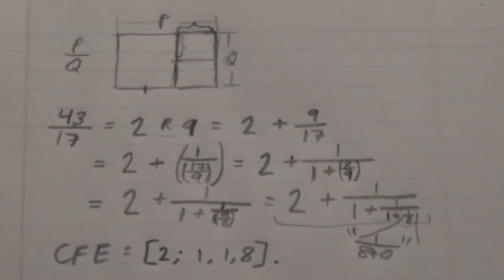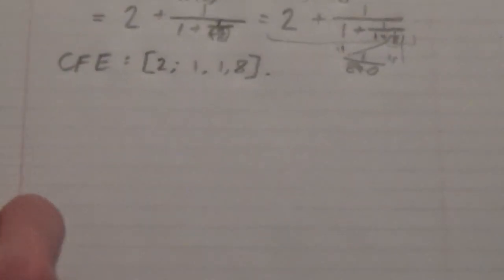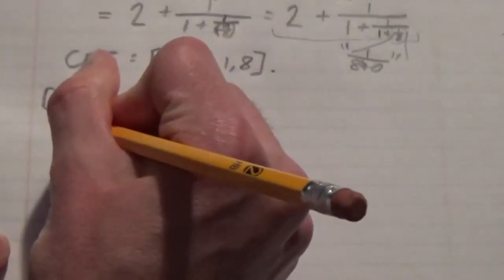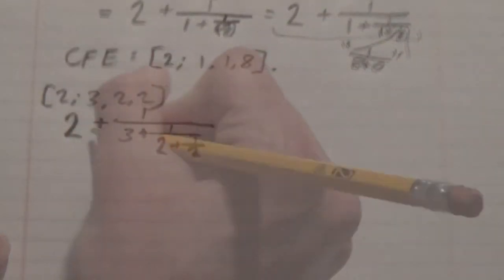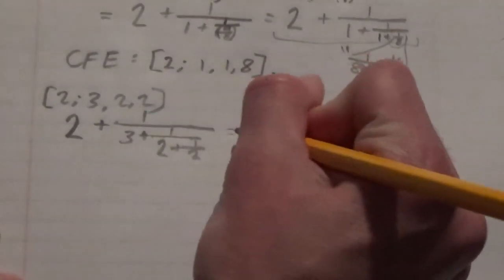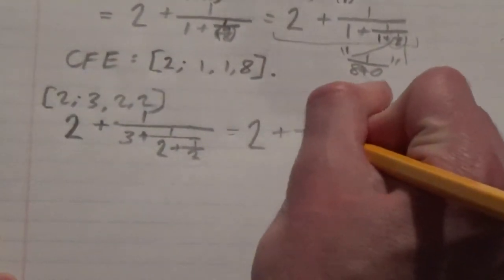We can also go the other way, from the Continued Fraction to the Ratio of Integers, which should become very clear in a moment. In order to do this, let's use 2 semicolon 3, 2, 2, 2. First, we can write it out in the more expanded notation. So it's clearly 2 plus 1 over 3 plus 1 over 2 plus 1 over 2.